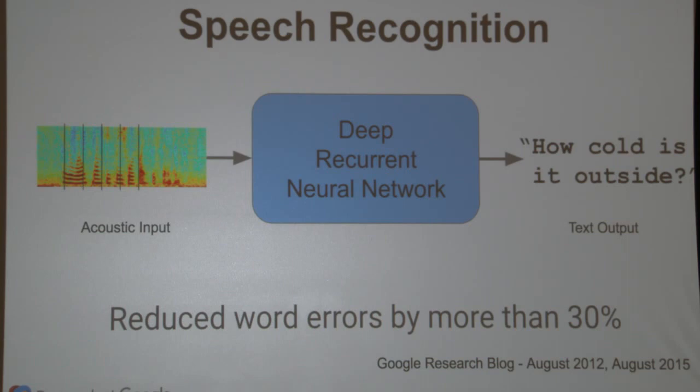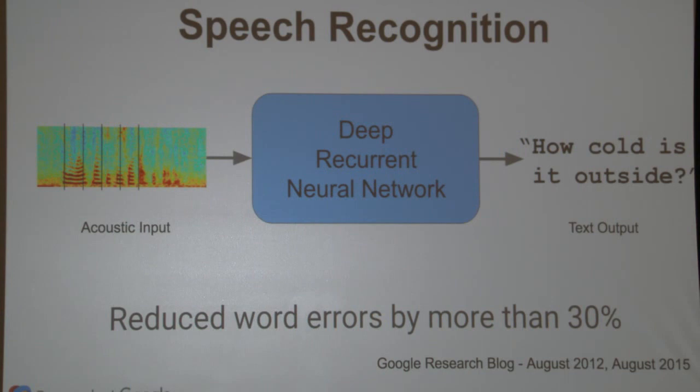One of the first problems we turned our attention to was speech recognition, in collaboration with our speech team. The problem is to take some acoustic signal and eventually predict the text of an utterance — what did the user actually say? By applying a deep recurrent neural network — one that feeds the output of one time step back into the next as an additional input signal, maintaining a state it keeps updating — we were able to reduce the word error rate by more than 30%. People on the speech team said that's the biggest single improvement they saw in speech recognition in 20 years.